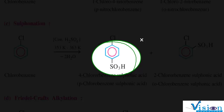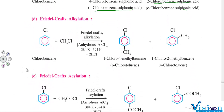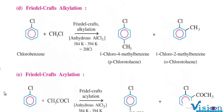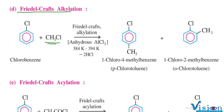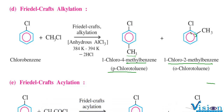Sulfonation of chlorobenzene gives para-chlorobenzenesulfonic acid and 2-chlorobenzenesulfonic acid. For Friedel-Crafts alkylation, reacting chlorobenzene with CH₃Cl in the presence of anhydrous AlCl₃ adds a CH₃ group at the ortho and para positions, giving 1-chloro-4-methylbenzene (para-chlorotoluene) and 1-chloro-2-methylbenzene (ortho-chlorotoluene).